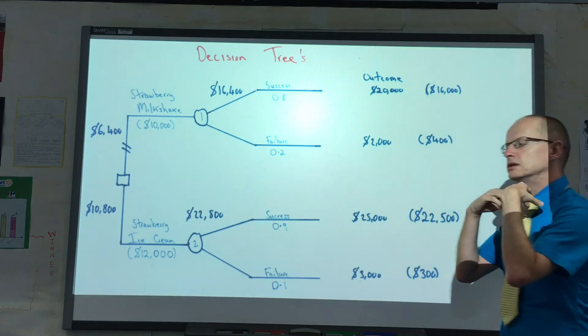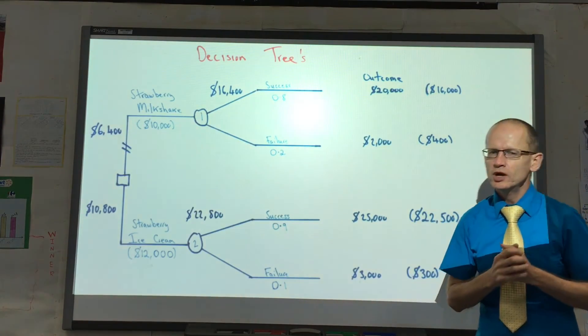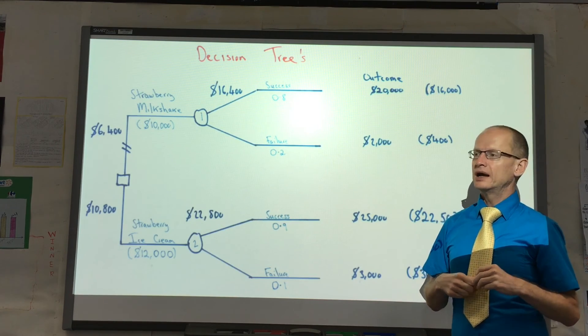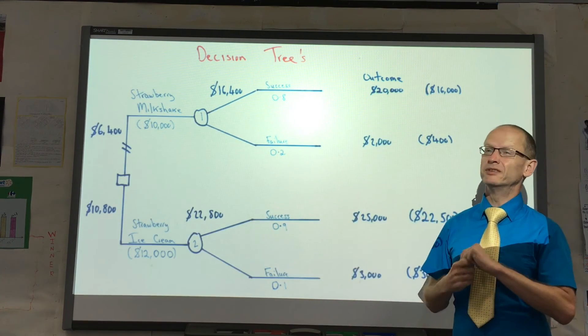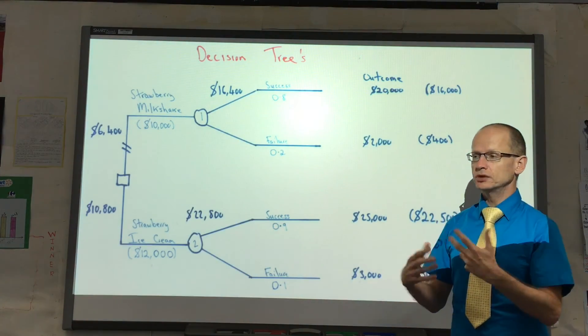So the decision tree, anything which is looking into the future, you have to be a little bit wary as to how accurate it is going to be. Anything which looks five years in the future, you are going to be exceptionally wary. Nevertheless, it does allow business to make a decision.